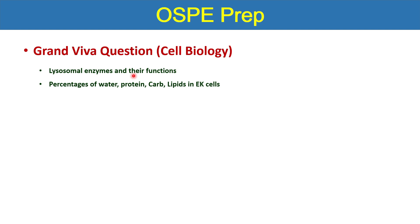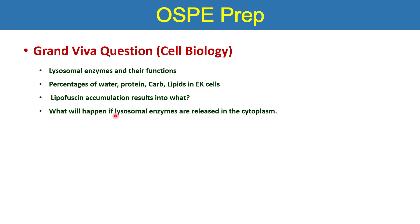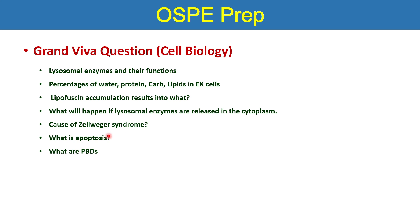For grand VIVA from cell biology: lysosomal enzymes and their functions, percentages of water, protein, carbohydrate, and lipids in eukaryotic cells. You should also know about lipofuscins, their accumulation, red spots, and the process of aging. What will happen if lysosomal enzymes are released into the cytoplasm — they will digest lipids, carbohydrates, and proteins since all hydrolases are present there. Also know the causes of Zellweger syndrome and what happens in it, what apoptosis is, and what peroxisomal biogenesis disorders (PBDs) are.